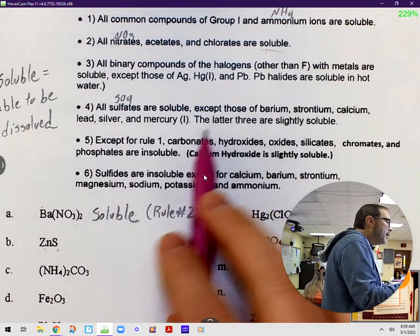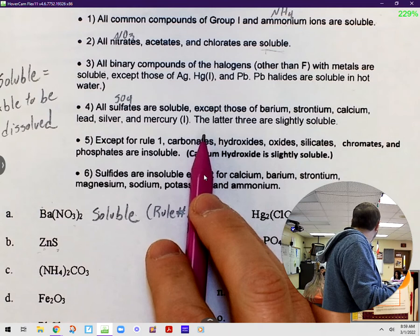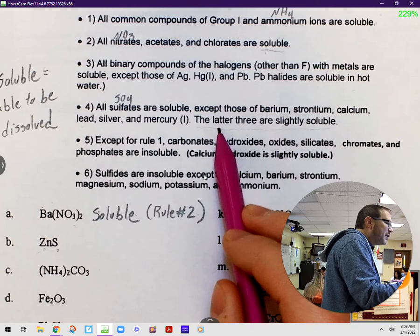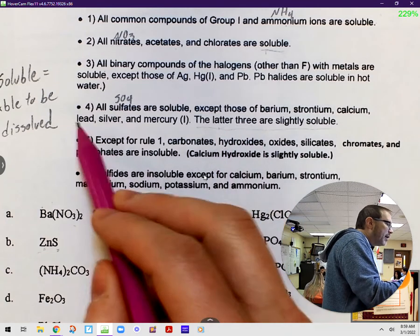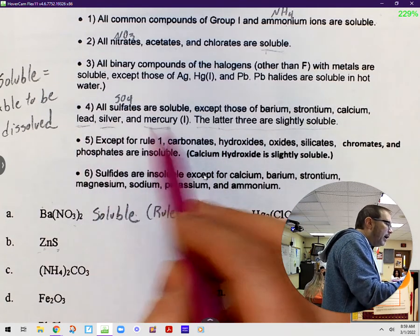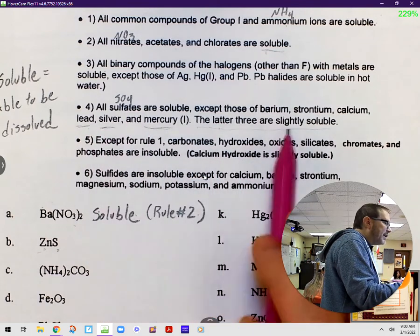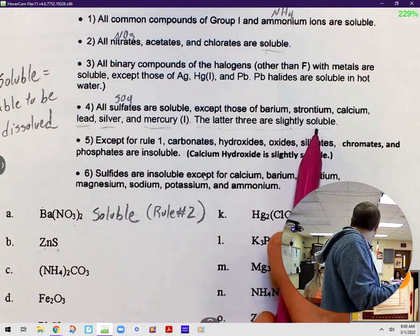That's not sulfate, right? So 4 doesn't do it for us. I think it's important to note, though, on number 4 because this is going to come up later. When it says the latter three are slightly soluble, latter just means the last ones. And so when we're talking about lead, silver, and mercury sulfates, if you have one of those, then you would write slightly soluble.